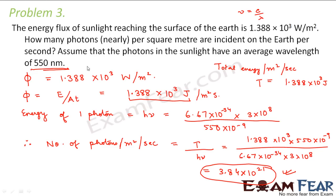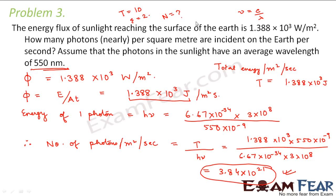To understand the logic: suppose the total number of chocolates distributed to a class is 10, and each student got 2 chocolates — the number of students is total chocolates divided by chocolates per student. Similarly here, the total energy reaching the earth's surface was 1.388 × 10³ joules per m² per second, and the energy of each photon was hν. So the number of photons equals total energy divided by energy of each photon.